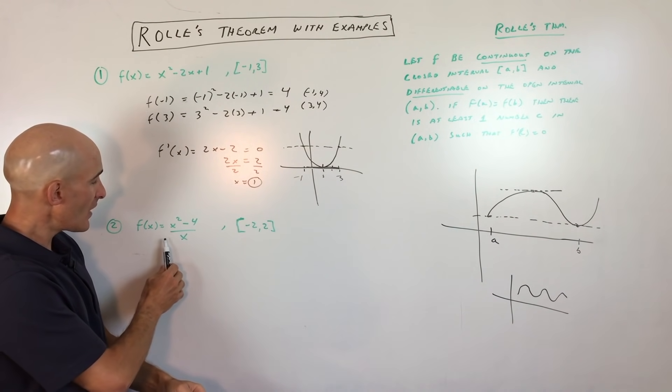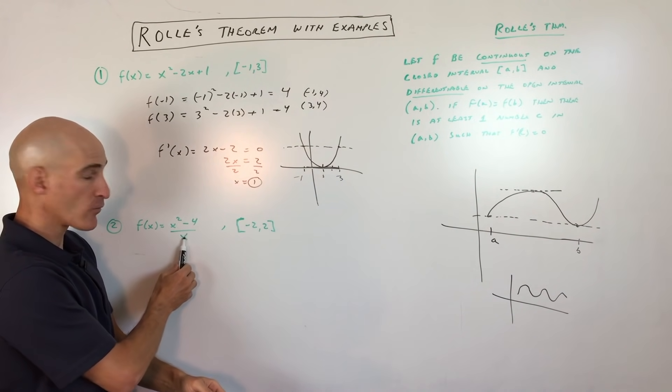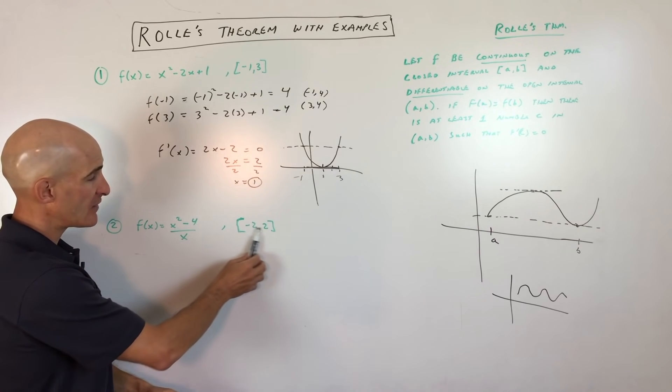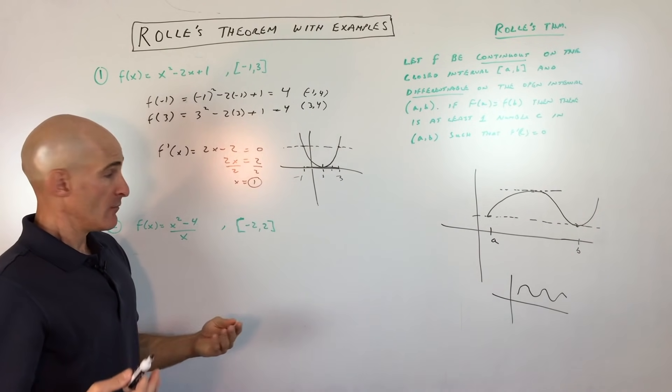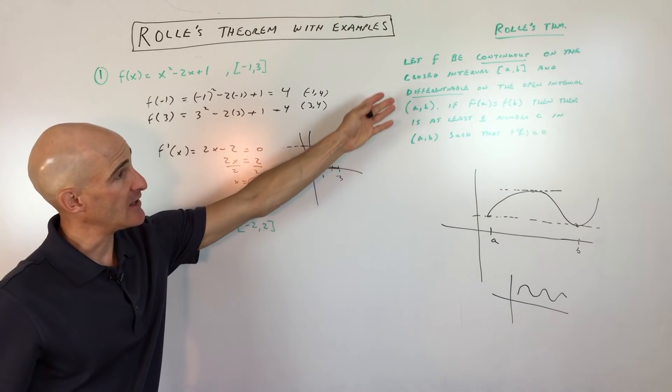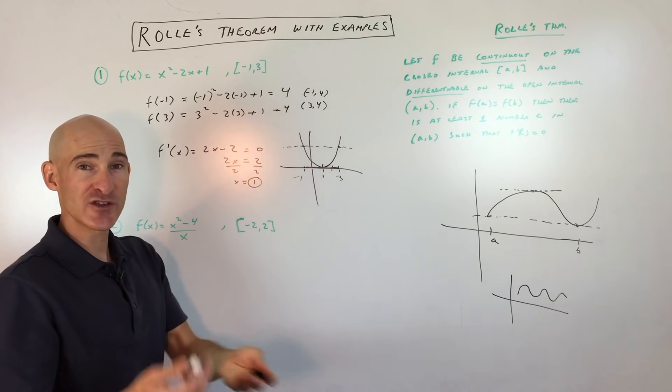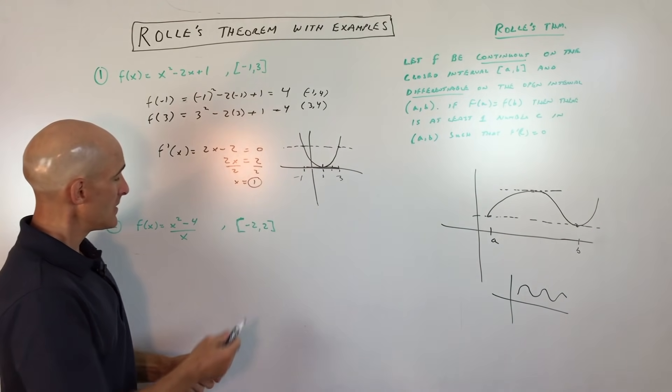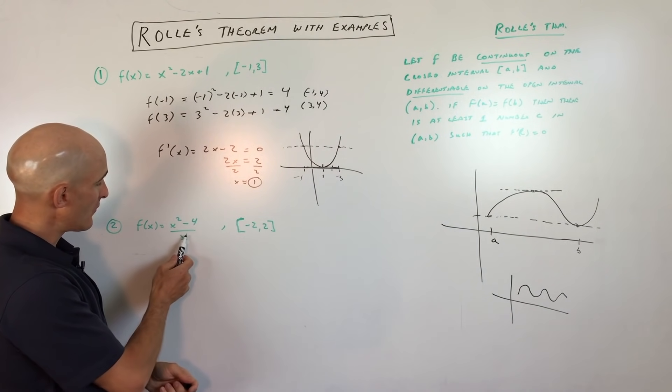So let's look at another example. Number two, here they give us a function, x squared minus 4, all divided by x. And we're looking at the interval negative 2 to 2. Before we can jump into Rolle's theorem, we have to see if it applies. So we have to look at, is it continuous, is it differentiable, and are the y values at the two endpoints the same? Well, first of all, we notice this denominator.